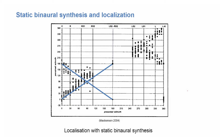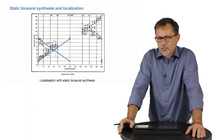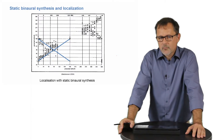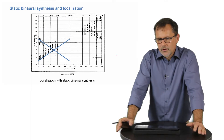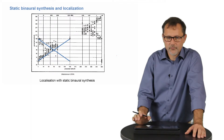These front-back confusions are due to the fact that both directions produce about the same interaural time and level differences. And since ITDs and ILDs are the most important cues for localization, this will result in a perceived ambiguity of localization. When you listen to the video again that I showed in the first part with closed eyes, with me talking in the anechoic chamber in front of a dummy head producing a static binaural signal, you can try to focus on exactly this phenomenon.